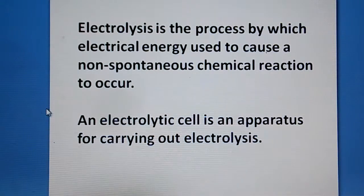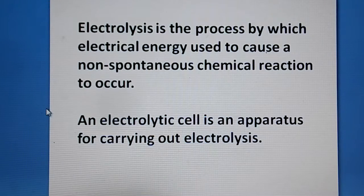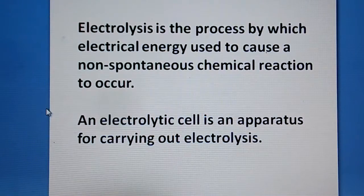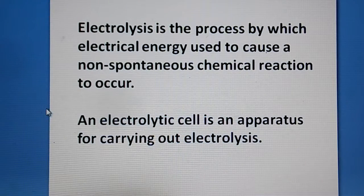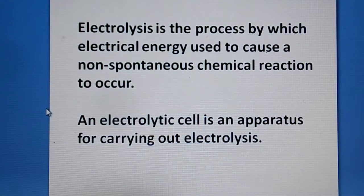An electrolytic cell is the apparatus used for carrying out the electrolysis. Essentially, in the electrolytic cell we have two electrodes. The electrodes used are platinum electrodes dipped in water, to which some amount — say 0.1 molar sulfuric acid, or dilute sulfuric acid — is added in order to facilitate enough ions to carry the current and to make the water conducting.